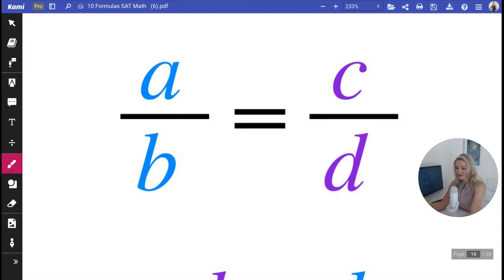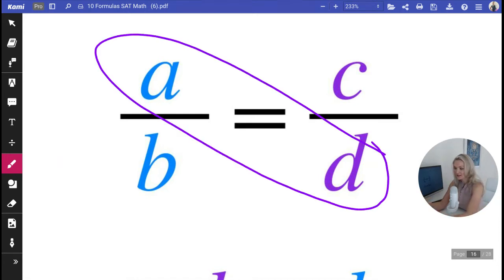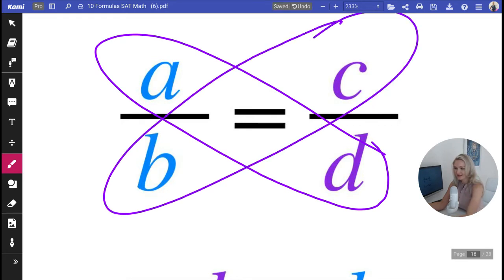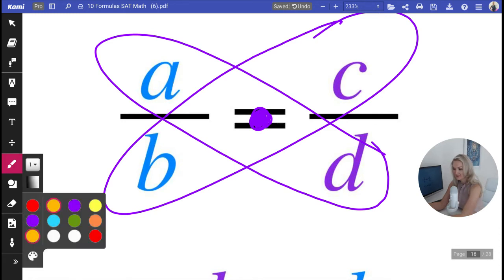I think cross multiplication looks a lot like an atom because instead of the equal sign, you're going to have a multiplication sign. So in my head, it makes sense that you're going to have b times c equals a times d.